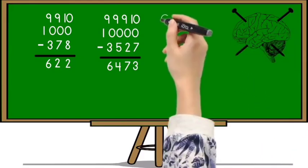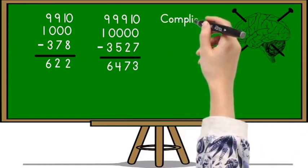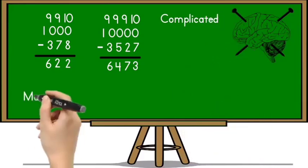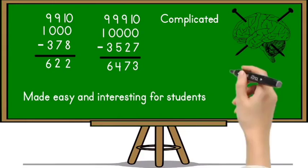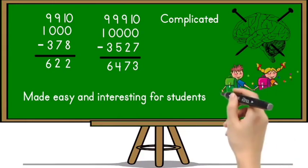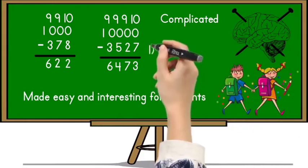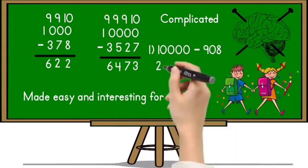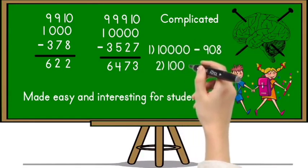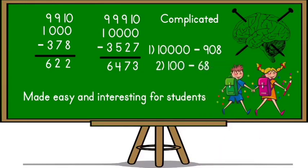Most students find such examples very complicated, but Vedic math makes it easy and interesting for students. So some examples for you: first one is 10000 minus 908 and the second one is 100 minus 68. I hope you will like this technique and solve these examples by using Vedic math concept and you will definitely get answers within few seconds. Mention your answer in comments.